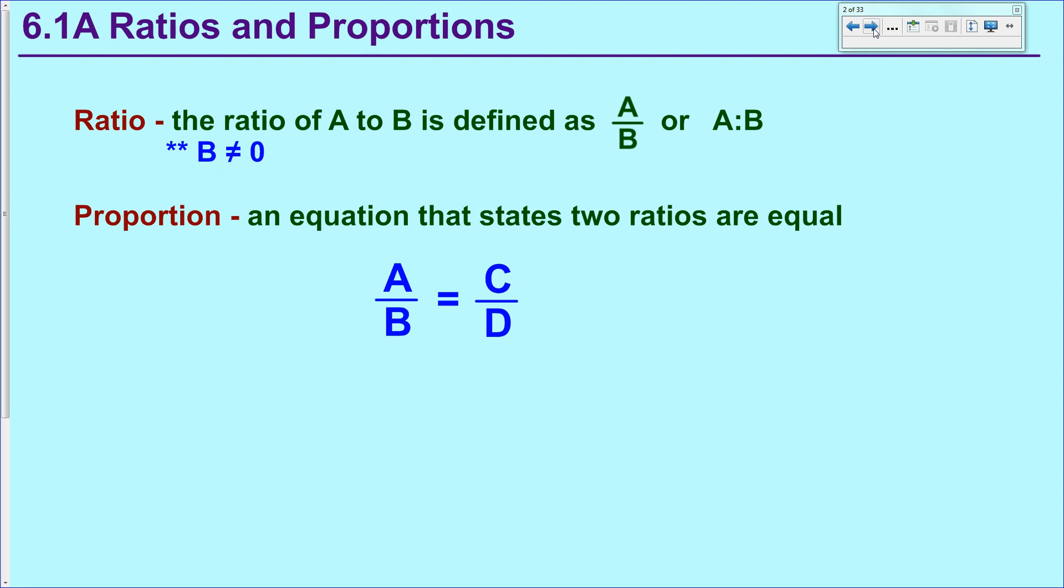A slight misconception is that a proportion is a fraction while a proportion is actually two ratios that are set equal to each other. It is an equation. So this book defines a proportion as any two fractions that are set equal to each other with an equal sign.